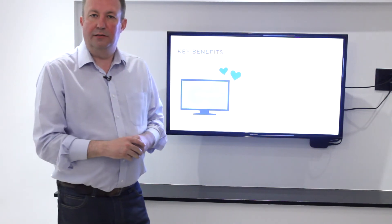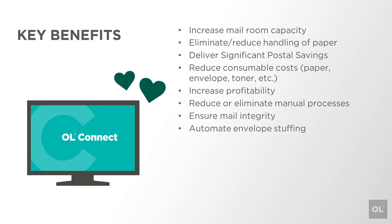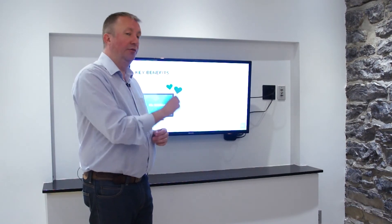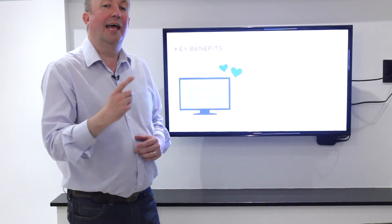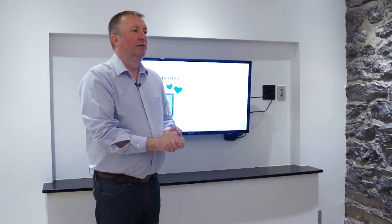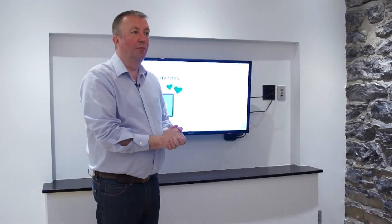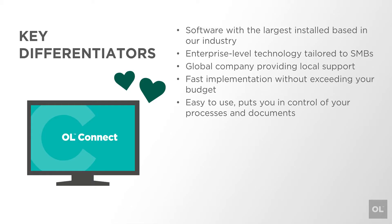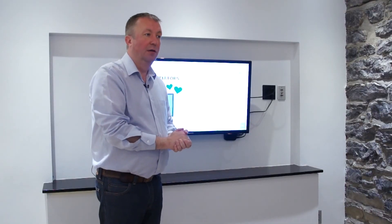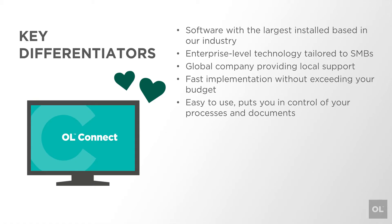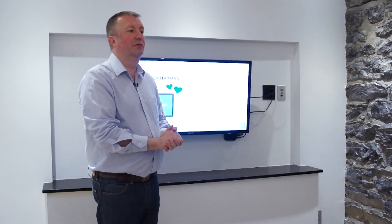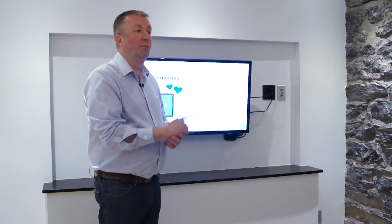In summary, what we're bringing to this is mail optimization. Mail optimization means more orders through your system because we can send more invoices out. And when we send those invoices out, you know the address is correct and the process is right, so we can help ensure your customers are happy. So why Objective Bloom? We have the largest install base in our industry. We're an enterprise technology company for mid-sized organizations. We're a global company with local offices providing global support. We implement fast, respect your timescales and your budgets. But more importantly, we put you in control of your processes with our software, enabling you to build your own solutions.